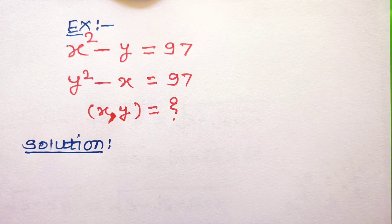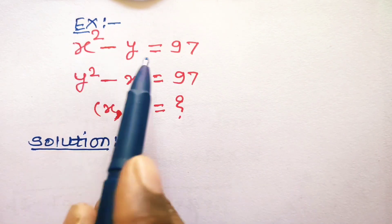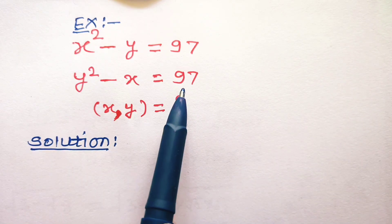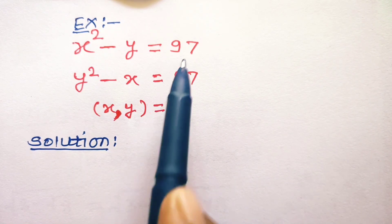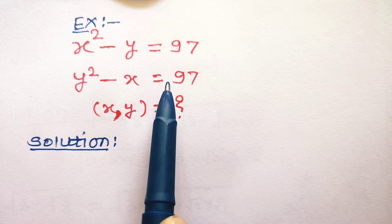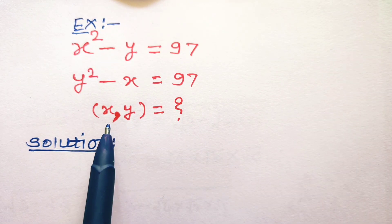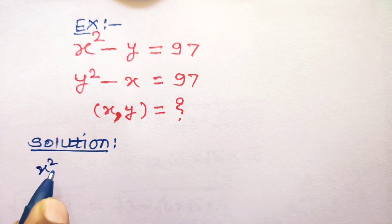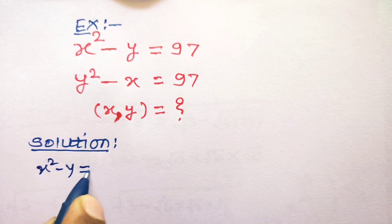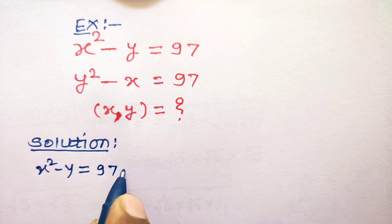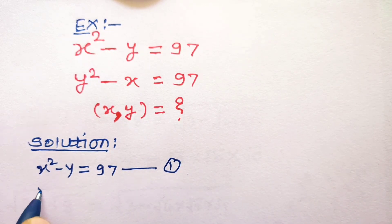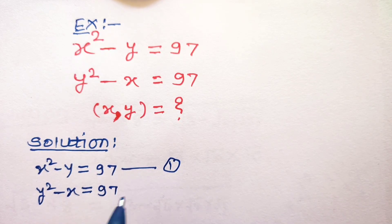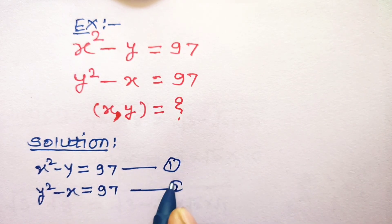Hello everyone. Let us solve these two equations: x squared minus y is equal to 97, and y squared minus x is equal to 97. These two equations are symmetric equations. Solving these two equations, we have to obtain the values of x and y. Let x squared minus y = 97 be equation number 1, and y squared minus x = 97 be equation number 2.